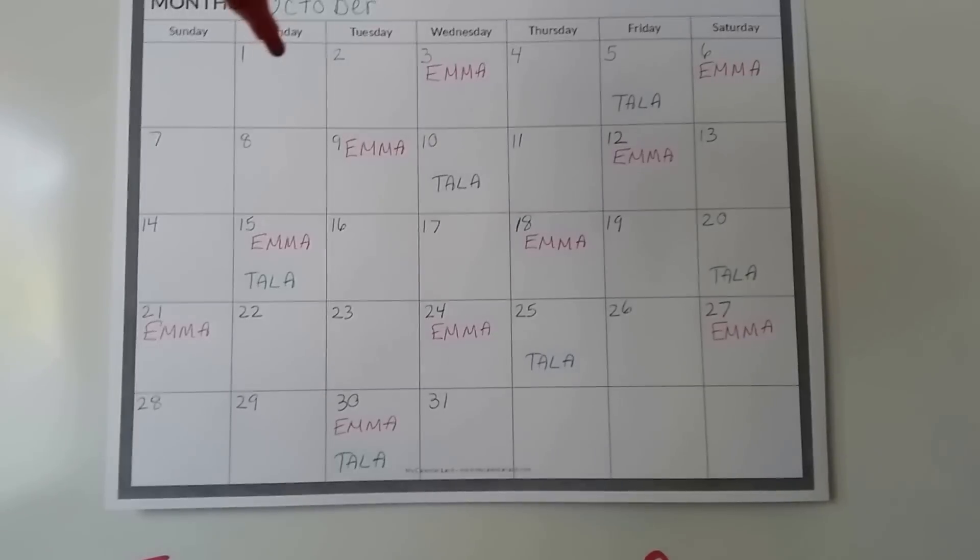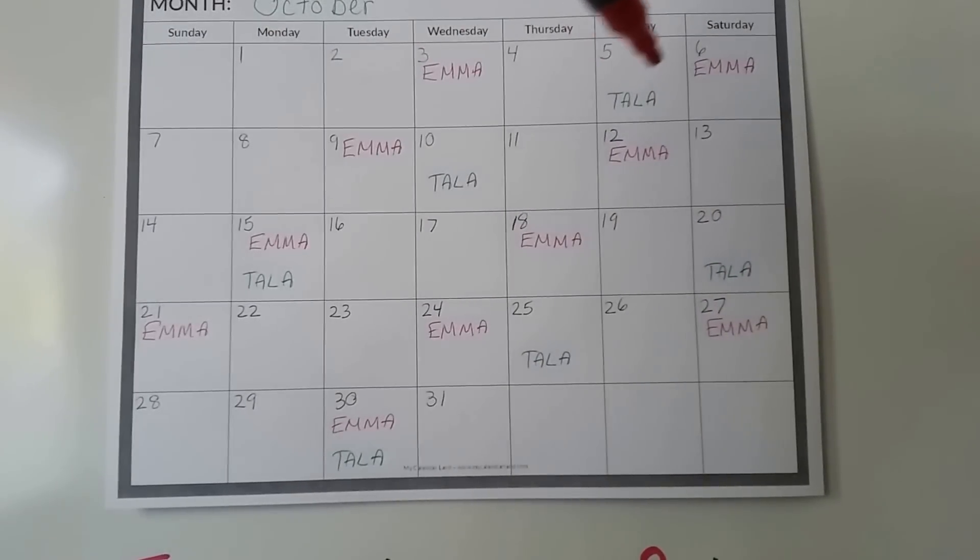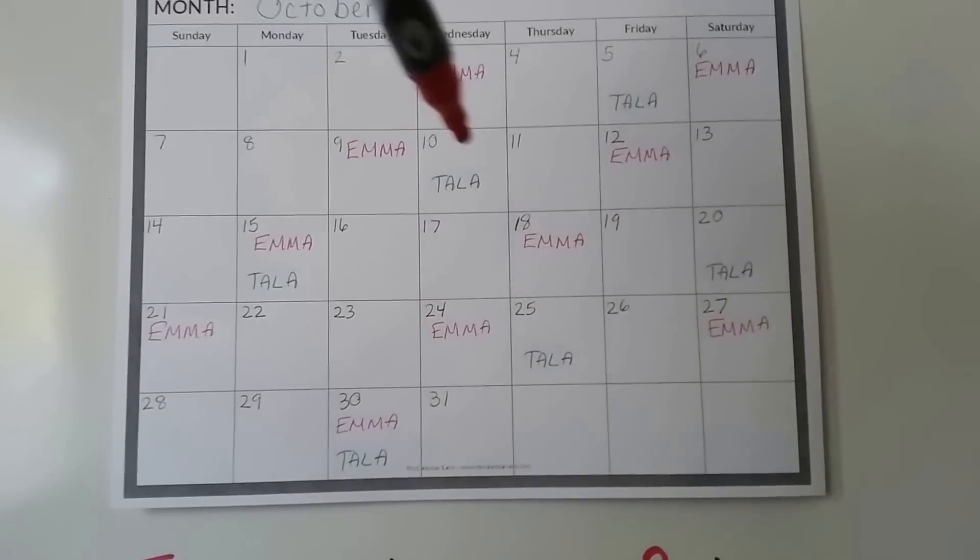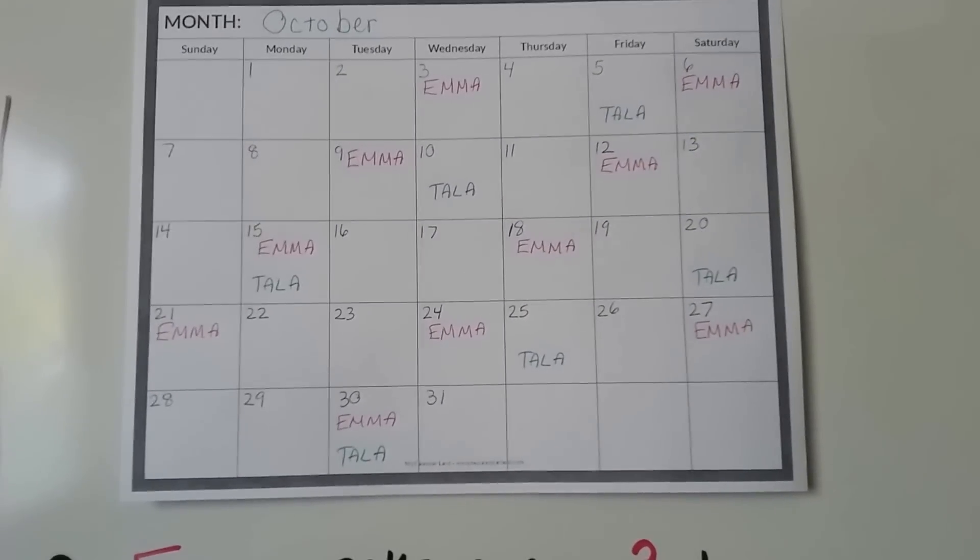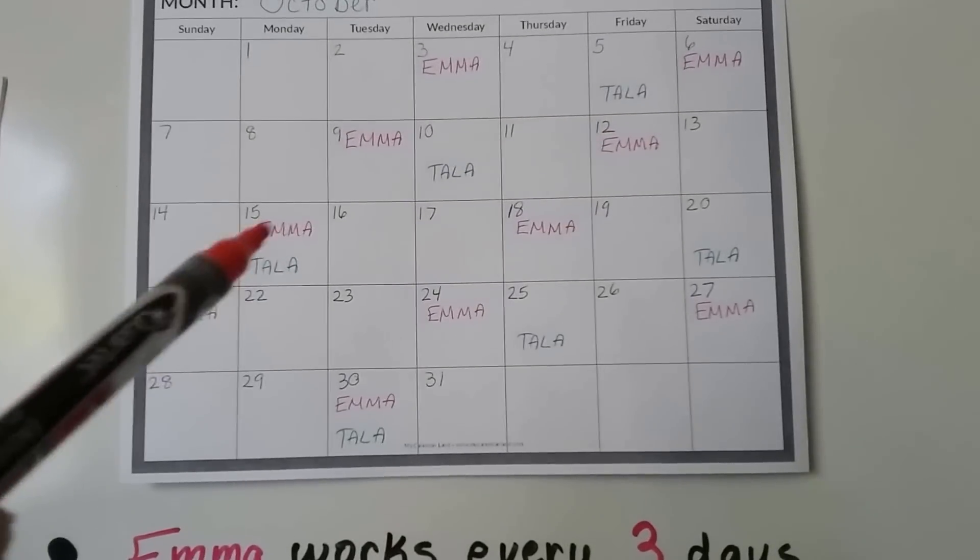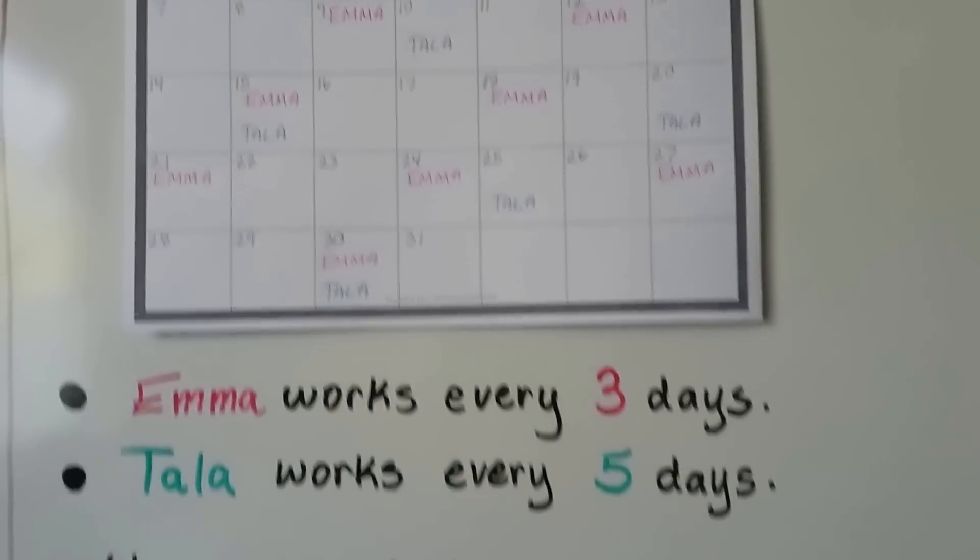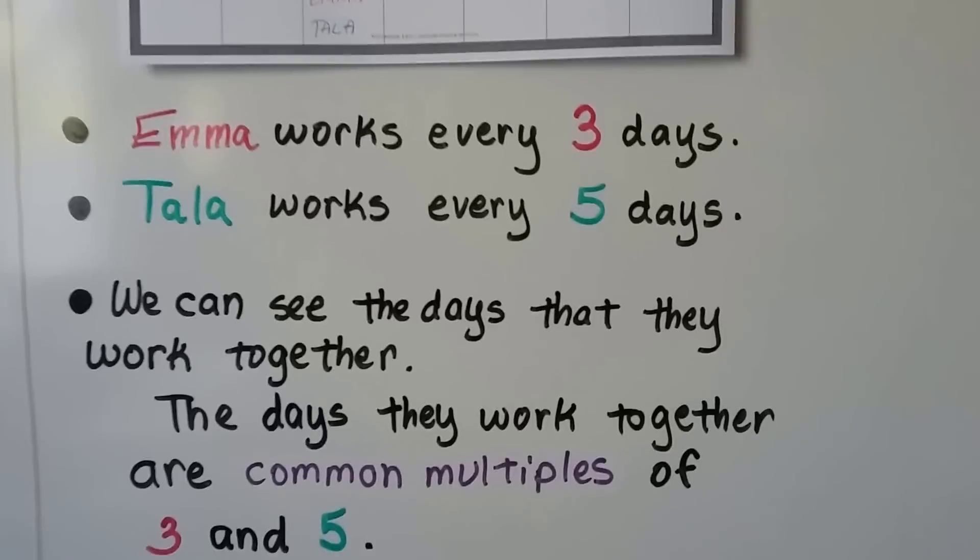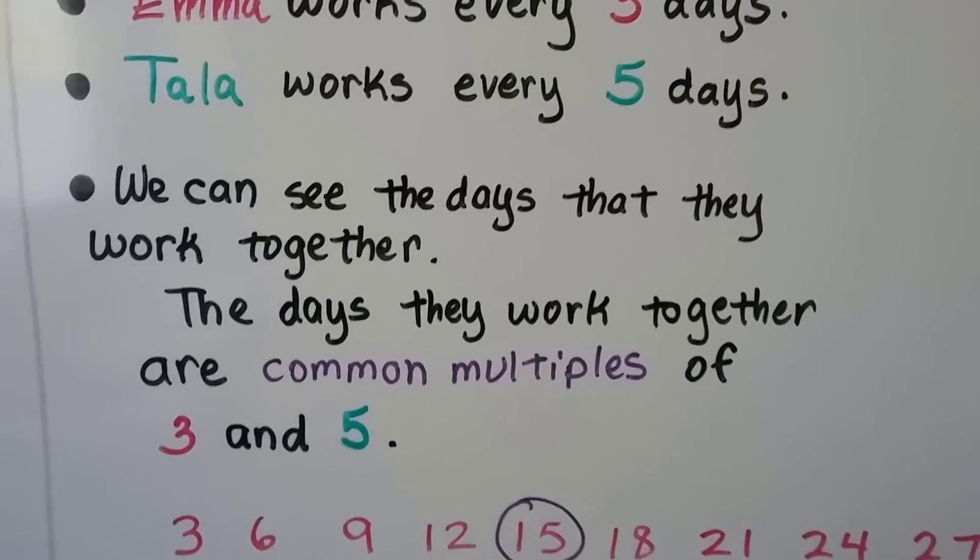But Tala works every 5th day. So she goes 1, 2, 3, 4, 5, now she works. And then 1, 2, 3, 4, 5, and now she works. And we can see the common multiples, the common days that they work. They're both going to work on the 15th and they're both going to work on the 30th together. We can see the days that they work together. The days they work together are common multiples of 3 and 5.